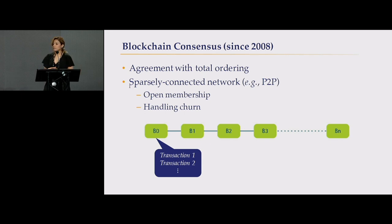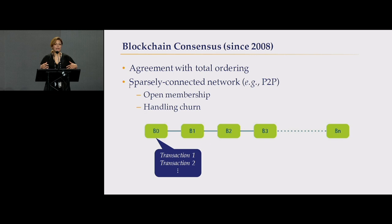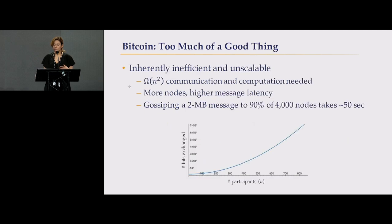Another thing blockchain adds to consensus protocols is open membership. Open membership means that servers can join the network, leave the network, and churn, and the blockchain can handle those churns. But at the same time, Bitcoin and traditional blockchains are too much of a good thing.